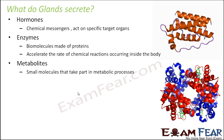Glands also secrete metabolites — molecules which take part in various metabolic processes. Metabolic processes are those processes essential for the sustenance of a living organism. Inside our body, so many different life processes occur: excretory system, reproductive system, circulatory system, digestive system. For each process there are many sub-processes, and the many molecules which take part in those processes are called metabolites. Many of these metabolites are also produced by these glands.